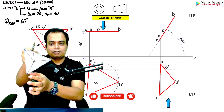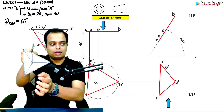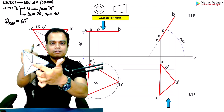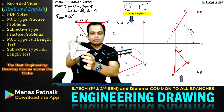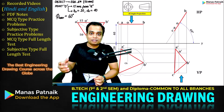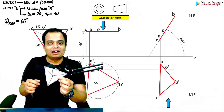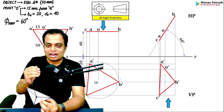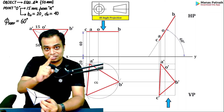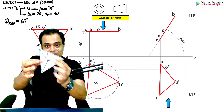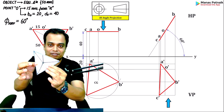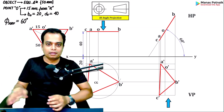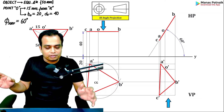Now the object has achieved equilibrium — you can see that the line joining point O and the center of gravity is absolutely vertical. Additionally, this arrangement is a case of the third quadrant: below HP and behind VP. The surface itself is at an angle of 60 degrees with the vertical plane. Now let's implement all of this.